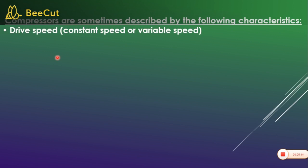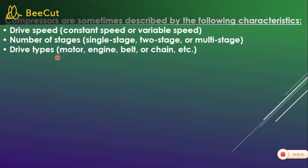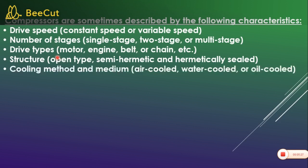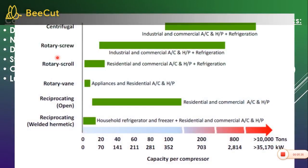Compressors are classified by speed: single stage, two stage, multi-stage. By drive motor type: engine type, belt or chain type. By structure: open, semi-hermetic, hermetic type. By cooling method: air-cooled, water-cooled, oil-cooled. By lubrication: splash lubricant, flash lubricant, post-lubricant, and oil-free lubricant. This is the tonnage capacity which can be used in each compressor type.